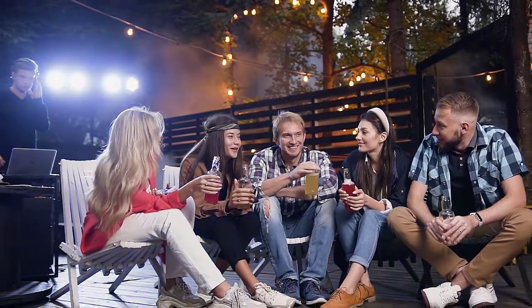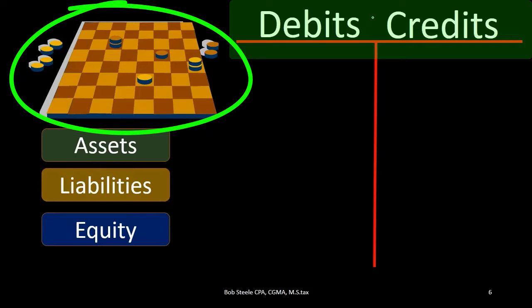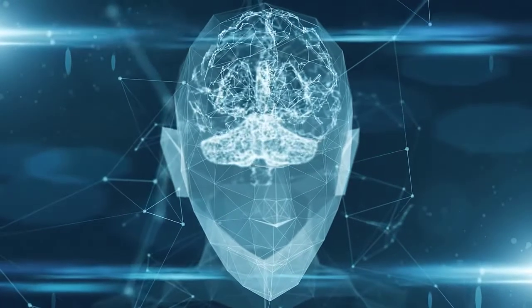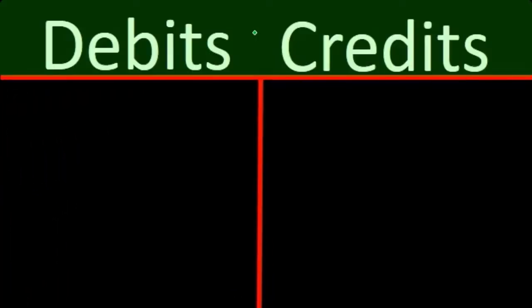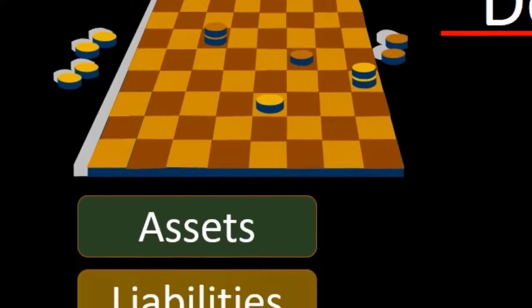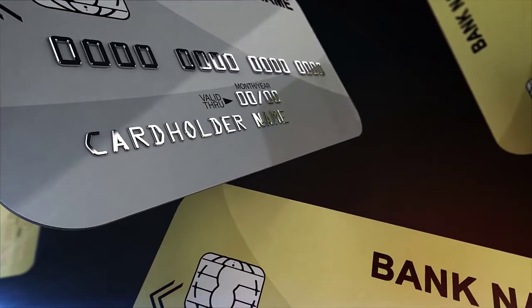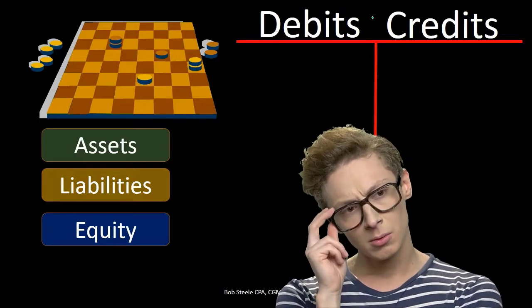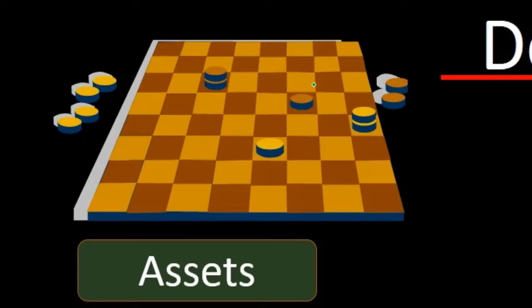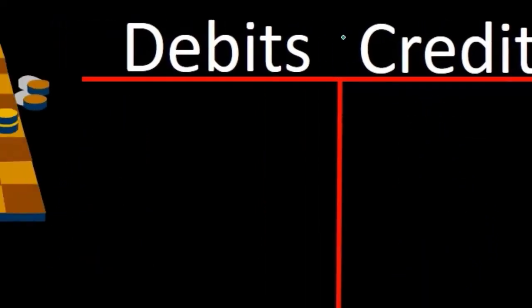All we're talking about with debits and credits is our playing board: debits will be on the left, credits on the right. Any other preconceived notions you have of debits and credits — from credit cards, debit cards, or your bank crediting your account — we need to get those out of your mind. Credits do not mean increased or decreased. Debits and credits are not inherently good or bad. Just think of debits on the left, credits on the right.